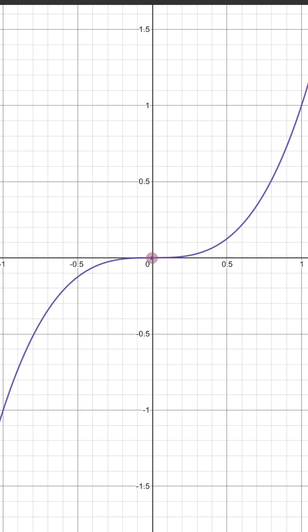The first part is from minus 1 to 0, which is the x-intercept of the function, and the other one is from 0 to 1.